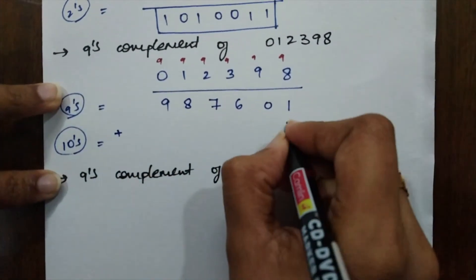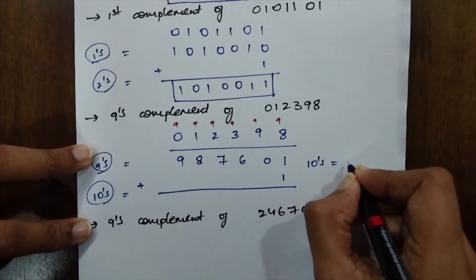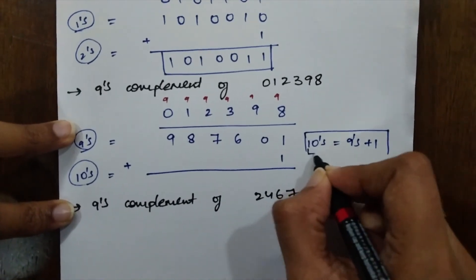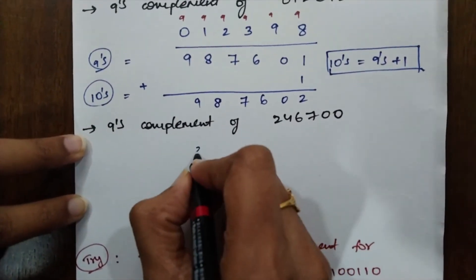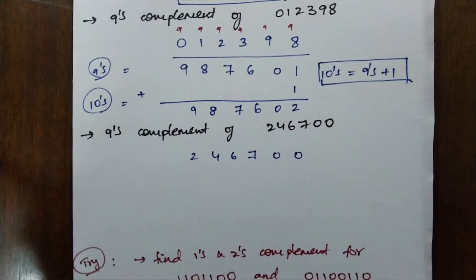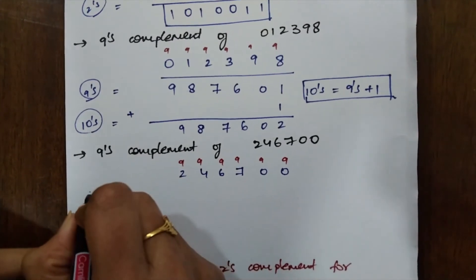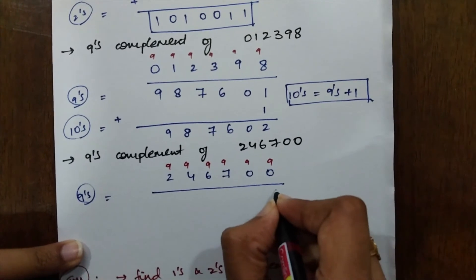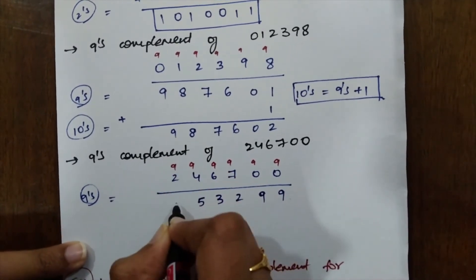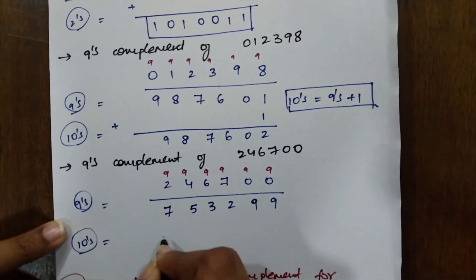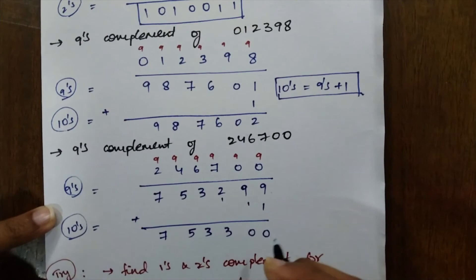The 10's complement is obtained by adding 1 to the 9's complement, just as the 2's complement equals the 1's complement plus 1. So 10's complement = 9's complement + 1, giving 106790. For another example, the 9's complement of 246700: 9−0=9, 9−0=9, 9−7=2, 9−6=3, 9−4=5, 9−2=7, giving 753299. Adding 1 for the 10's complement gives 753300.